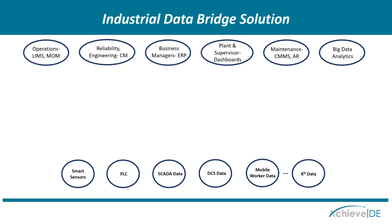Basically, there are two types of applications that you see within a plant environment. There's the business system or higher level supervisory applications, and then there are the shop floor real-time systems and data sources.